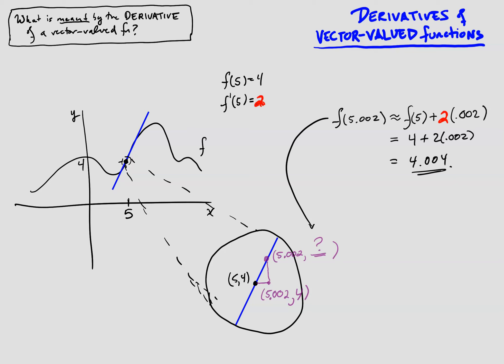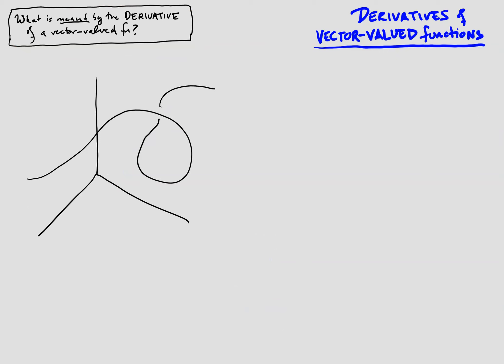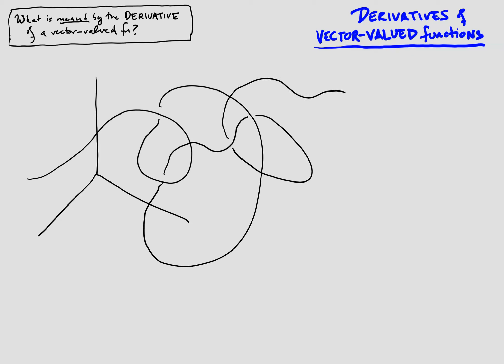With that in mind, let's get back to our question: what do we mean by the derivative of a vector-valued function? Let's draw the graph of one in R3 — some curve. Let's say we've got a particular point on the curve, f(3): when we put the real number 3 into our vector-valued function, we end up with this point in R3, which we identify with the position vector extending from the origin to that point.